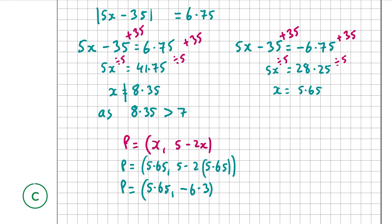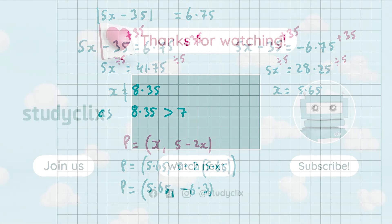Since P = (x, 5 minus 2x), substituting x = 5.65 gives 5 minus 2 times 5.65 equals minus 6.3. Therefore P = (5.65, minus 6.3). That's the coordinate of P for part C, the final part of the question. Thank you very much for watching and I hope I helped.